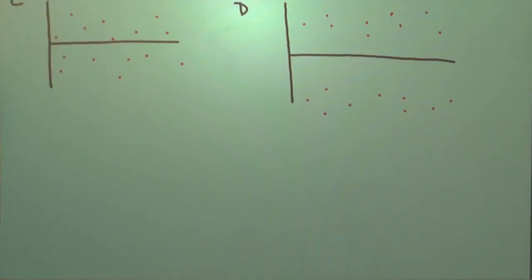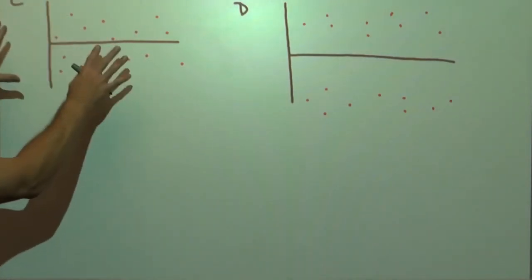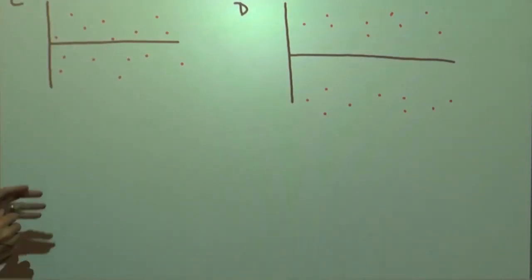This is healthy. No noticeable patterns, so that's a healthy-looking residual plot. Very random.